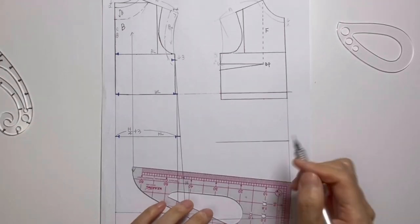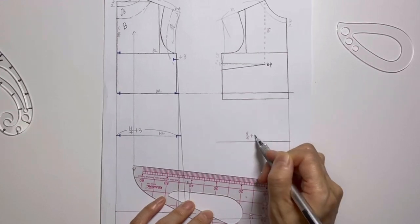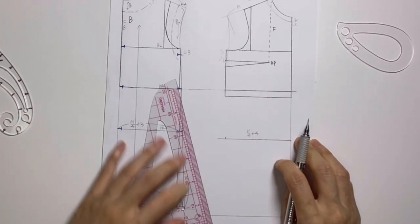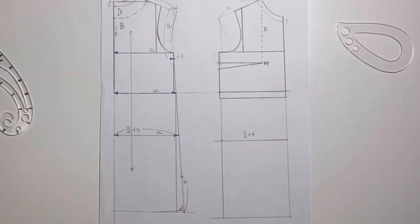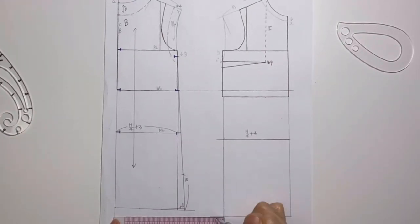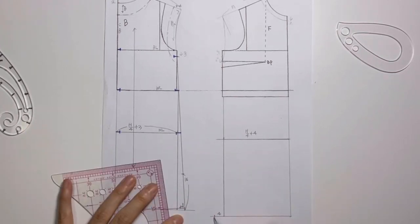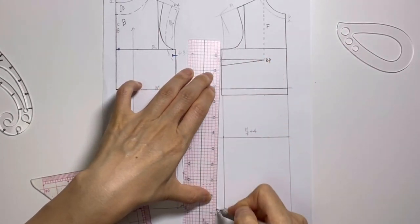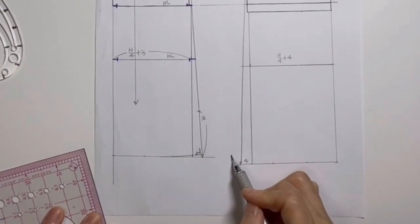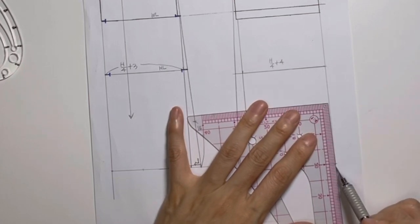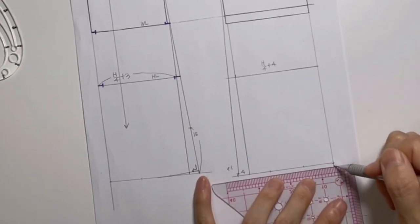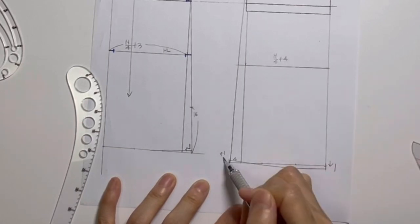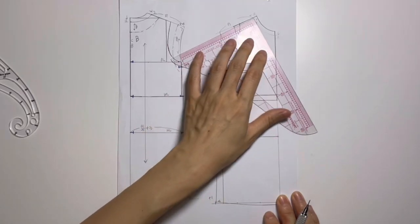Like the back piece, mark hip length at 18cm. Here also mark the point at 1/4 H plus 4, which gives us 26. Draw a rectangular box. Then extend 3 to 4cm at the hem and connect this point to the armhole point. Go up 1cm from the side seam and come down 1cm on the front piece. Come down 1cm and connect to the point raised 1cm.